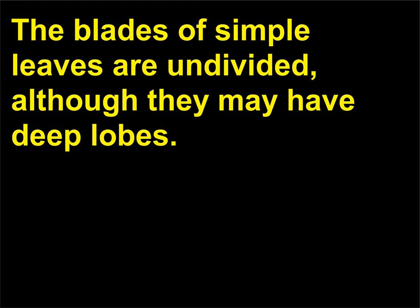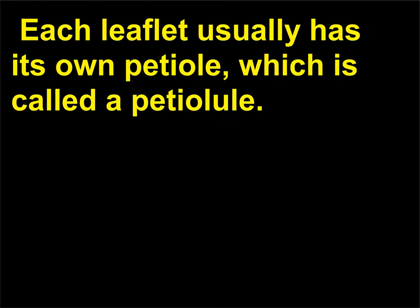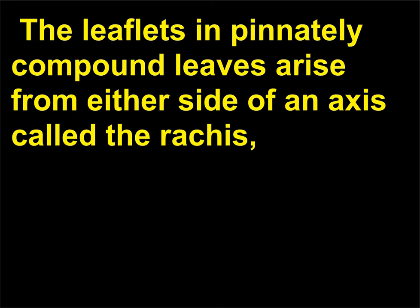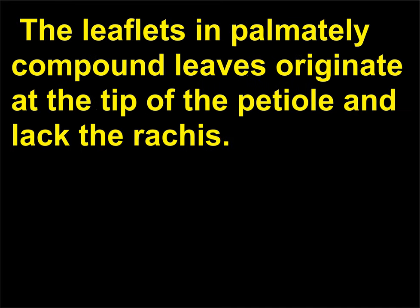The blades of simple leaves are undivided, although they may have deep lobes. By contrast, the blades of compound leaves consist of clearly separated leaflets. Each leaflet usually has its own petiole, which is called a petiolule. There are two types of compound leaves: pinnately compound leaves and palmately compound leaves. The leaflets in pinnately compound leaves arise from either side of an axis called the rachis, which is an extension of the petiole. The leaflets in palmately compound leaves originate at the tip of the petiole and lack the rachis.